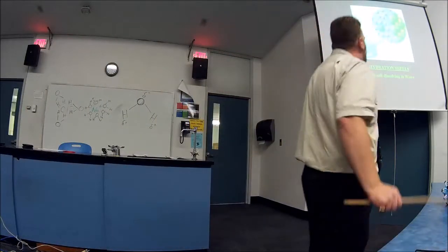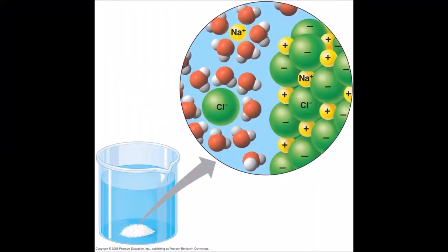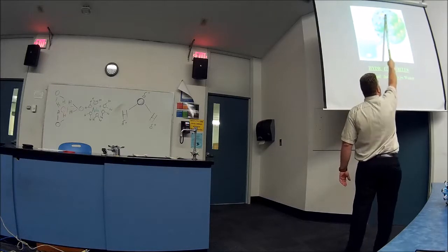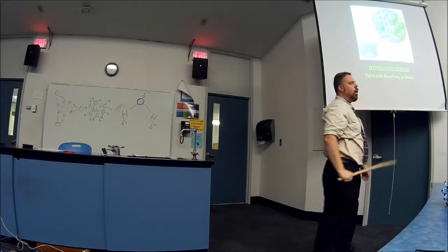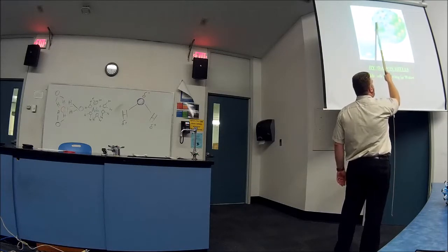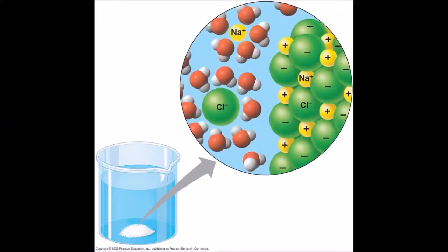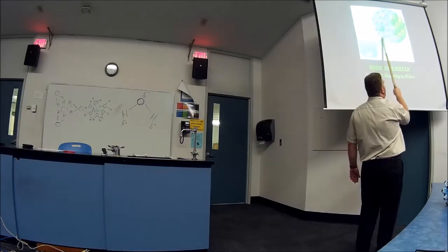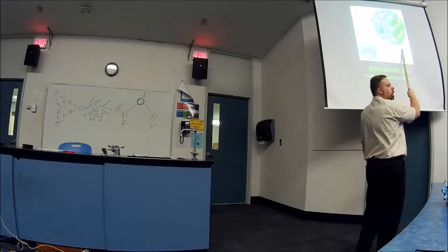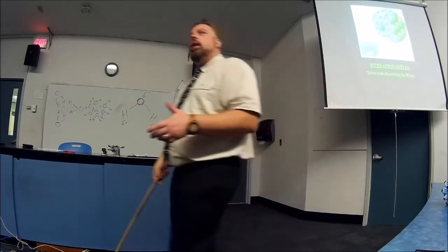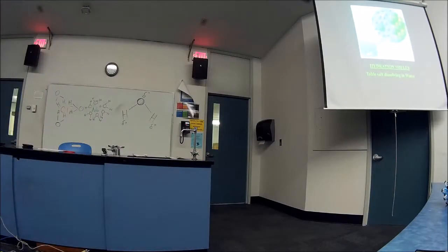When you put sodium chloride in water, the sodium is surrounded by the oxygen portions of the water molecules, and the chloride is surrounded by the hydrogen portions. Water molecules gradually break apart the salt crystal and surround each ion. That's dissolving sodium chloride in water.